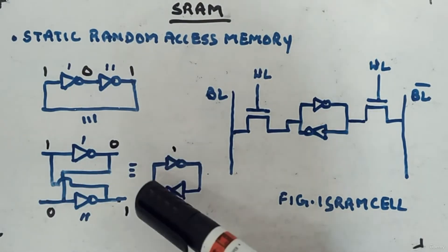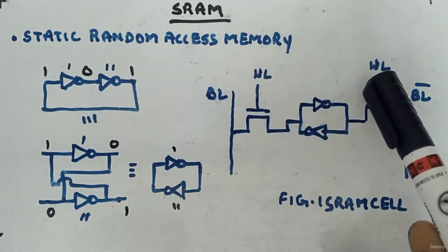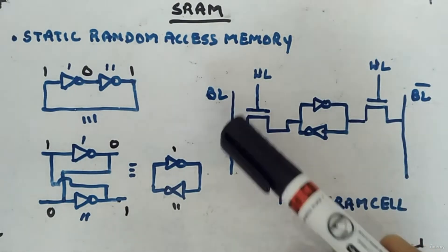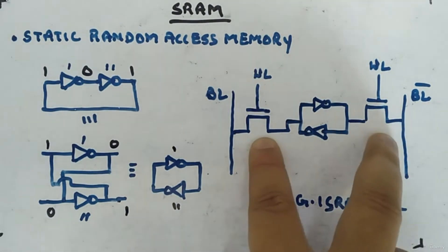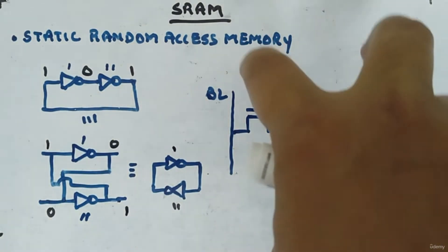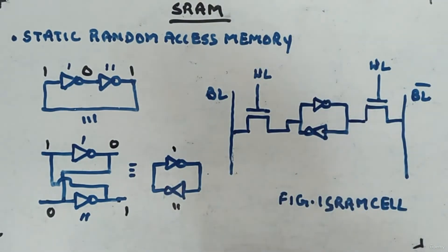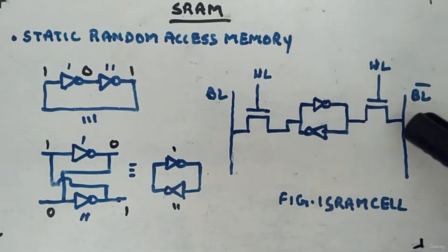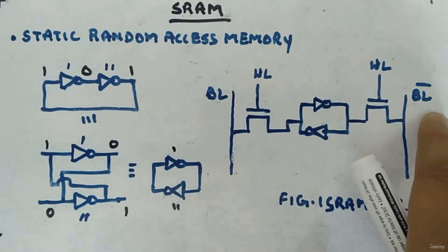Taking this circuit, I will add two NMOS transistors whose gates are connected to the word line (WL), one side connected to BL (bit line) and the other to BL bar (bit line bar). These NMOS transistors work in pass transistor logic — source and drain don't matter. If WL is high, the circuit connects to BL and BL bar; if WL is low, it acts as an open switch.